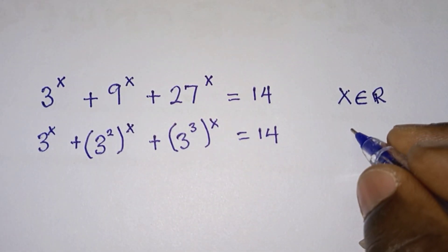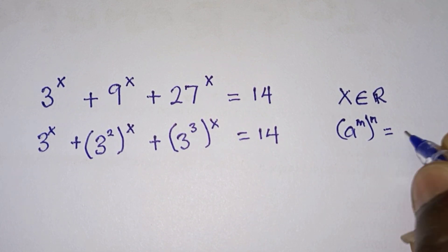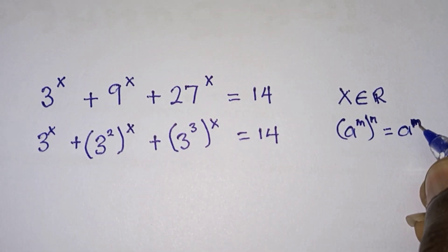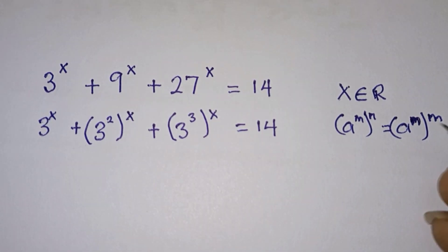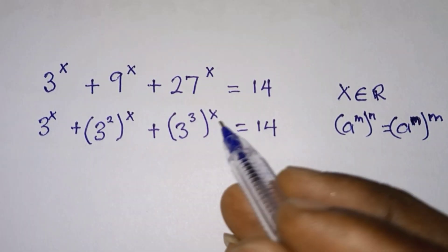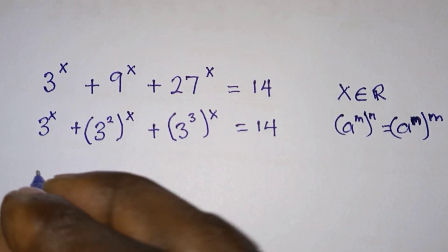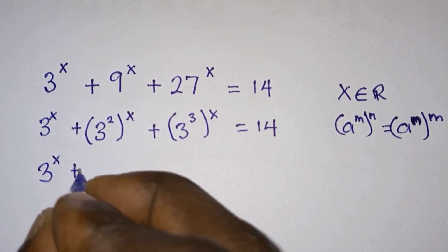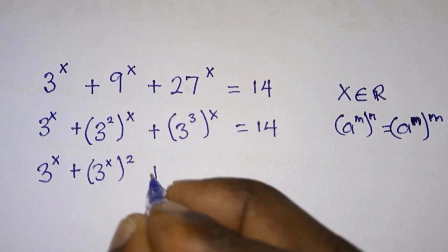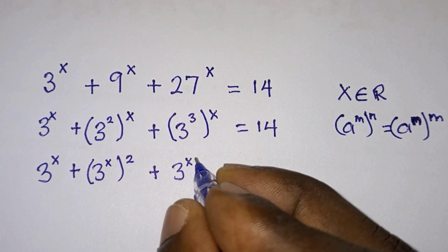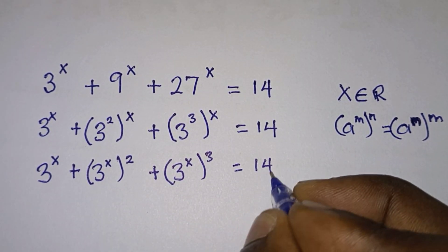Now let's apply the power rule: a to the power m, to the power n, is the same as a to the power mn. What it means is that we can interchange the position of x and the base exponent. So we're going to have 3 to the power x, plus 3 to the power 2x, plus 3 to the power 3x, and this is equal to 14.